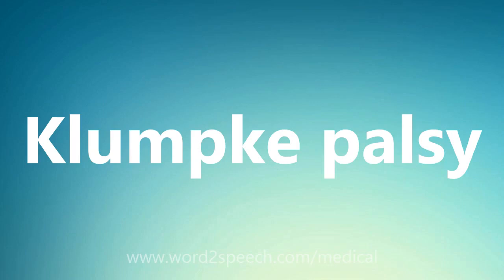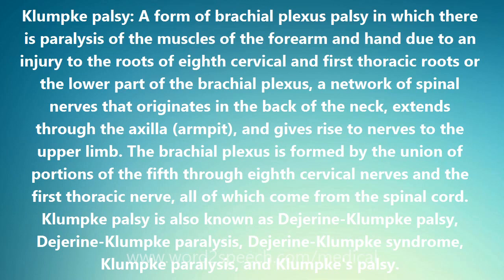Klumpke's Palsy is a form of brachial plexus palsy in which there is paralysis of the muscles of the forearm and hand due to an injury to the roots of the 8th cervical and 1st thoracic roots, or the lower part of the brachial plexus — a network of spinal nerves that originates in the back of the neck, extends through the axilla (armpit), and gives rise to nerves to the upper limb. The brachial plexus is formed by the union of portions of the 5th through 8th cervical nerves and the 1st thoracic nerve, all of which come from the spinal cord.